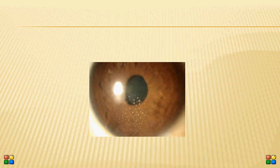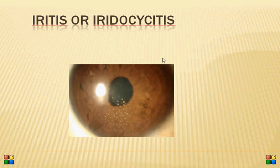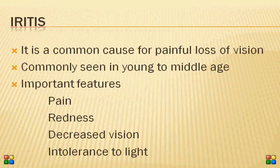Welcome to another important topic in ophthalmology: iritis or iridocyclitis. As the name suggests, it is inflammation of the iris, or the iris and the ciliary body together. Because the iris and ciliary body are derived from the same tissue — the middle vascular coat — inflammation of one part is commonly associated with the other. It is a common cause of painful loss of vision.